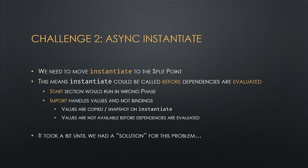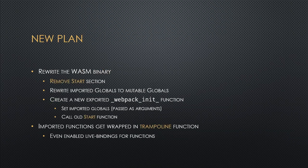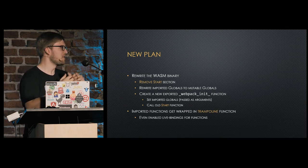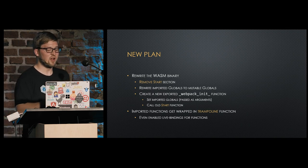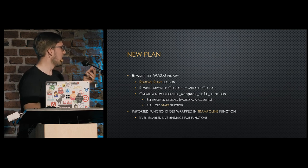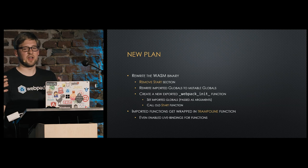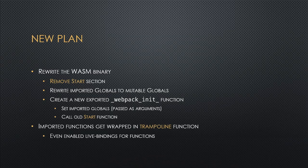The solution is to rewrite the WebAssembly binary. We remove the start section and remove all imported globals. Instead, we create a new function in the WASM binary called webpack-init. This init function is called with all the dependencies — all globals are passed into it. It copies its arguments to the globals, lazily initializing them, and also calls the old start function. We can then call this webpack-init function in the evaluation phase, making it work correctly.